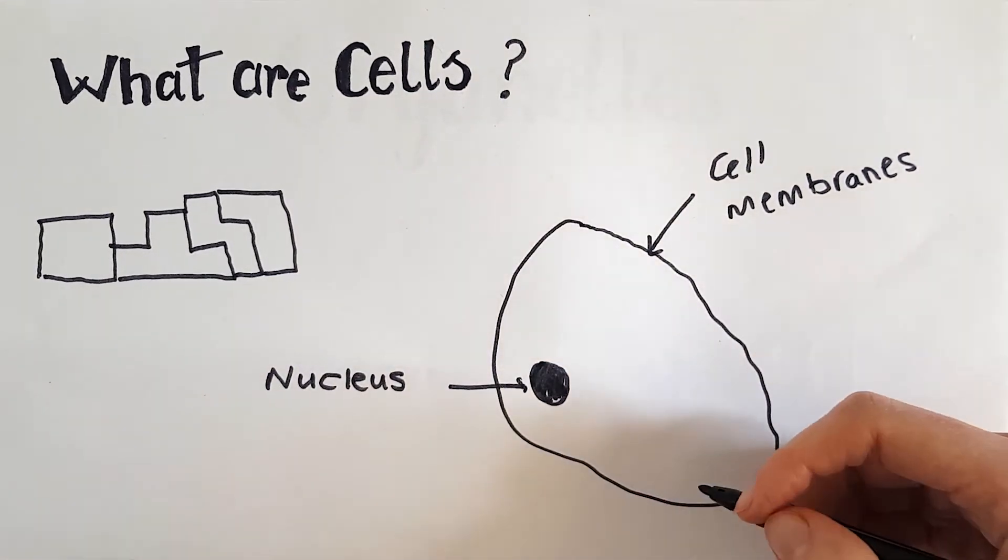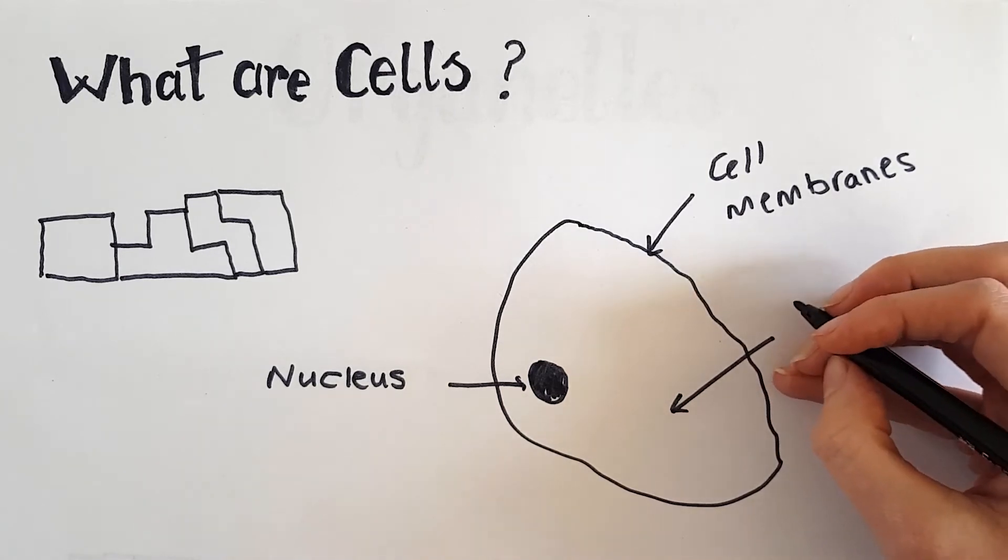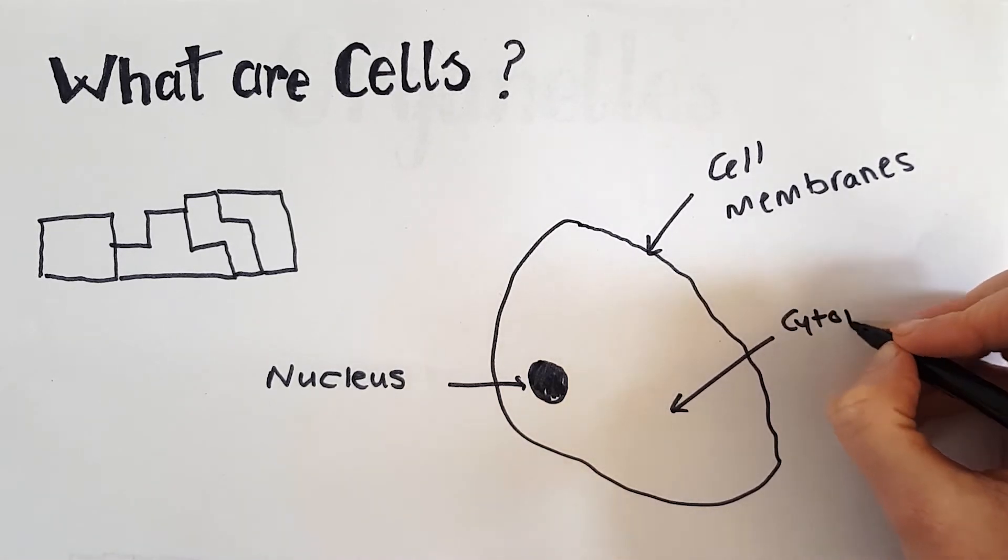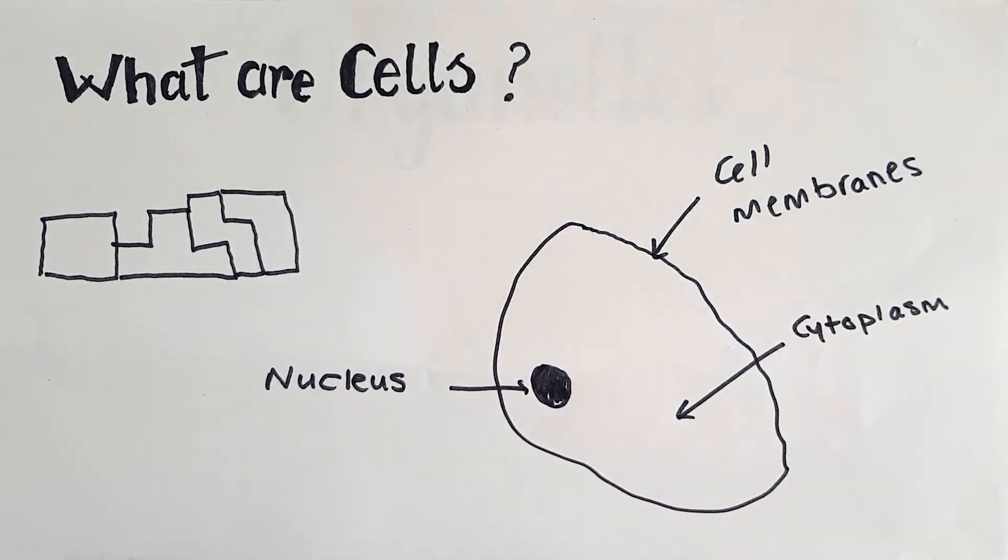Inside the cell, in the centre, is a gooey-like substance that's called cytoplasm. This is where all the important chemical reactions of a cell take place.